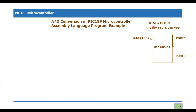Furthermore, the crystal oscillator attached to this PIC18F452 is 10 MHz. The VDD voltage is +5V connected to the VDD pin, and VSS is connected to 0V. These two values will be used for calculation of the reference voltage.